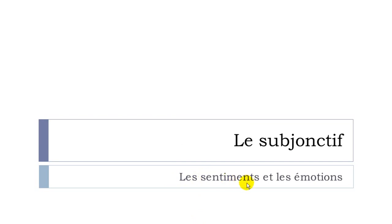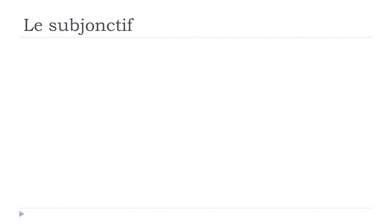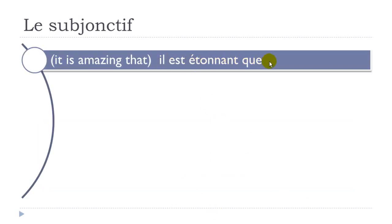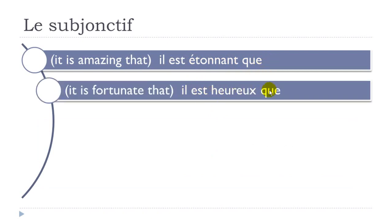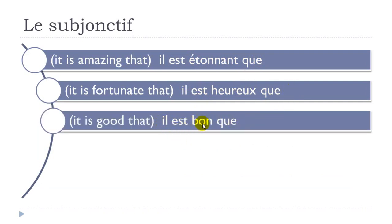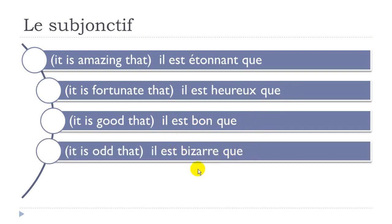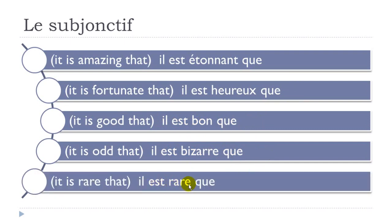When expressing feelings and emotions, you will often use le subjonctif. Expressions include: il est étonnant que, il est heureux que, il est bon que, il est bizarre que, il est rare que, il est regrettable que, il est honteux que, il est étrange que, il est surprenant que, il est dommage que.